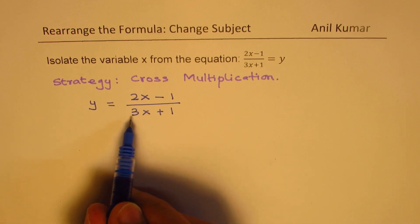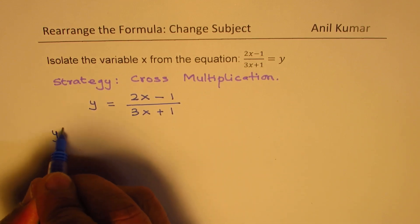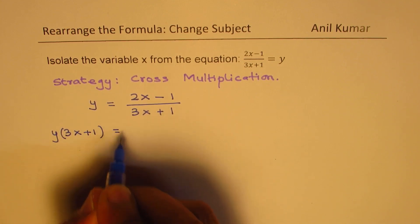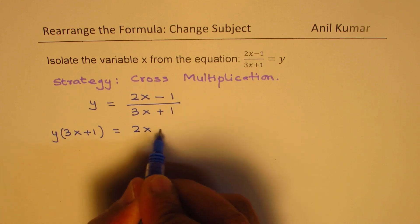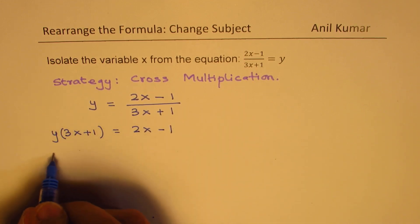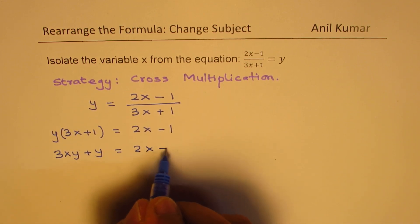So, when you cross multiply, 3x plus 1 gets multiplied with y. You get y times 3x plus 1 equals 2x minus 1. Now, we can apply the distributive property and we get 3xy plus y equals 2x minus 1.